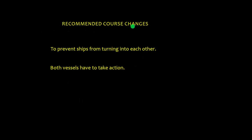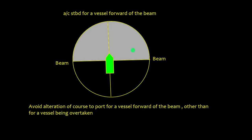For recommended course changes, the goal is to prevent ships from turning into each other. If a target is forward of the beam — whether on the starboard or port bow — the rule clearly states: avoid alteration of course to port for a vessel forward of the beam, other than for a vessel being overtaken. So if you are not overtaking and you see the target forward of the beam, you must alter course to starboard.